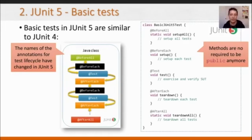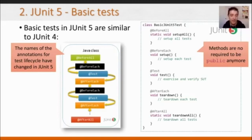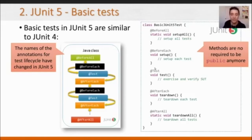If you are familiar with JUnit 4, a JUnit 4 test has a class where you annotate methods with the @Test annotation. In JUnit 5 it's the same concept, but the names of some annotations have changed. We have @Test to mark a method as a test, @BeforeAll and @BeforeEach for setup, and @AfterEach and @AfterAll for teardown. This is the lifecycle of a JUnit 5 test.